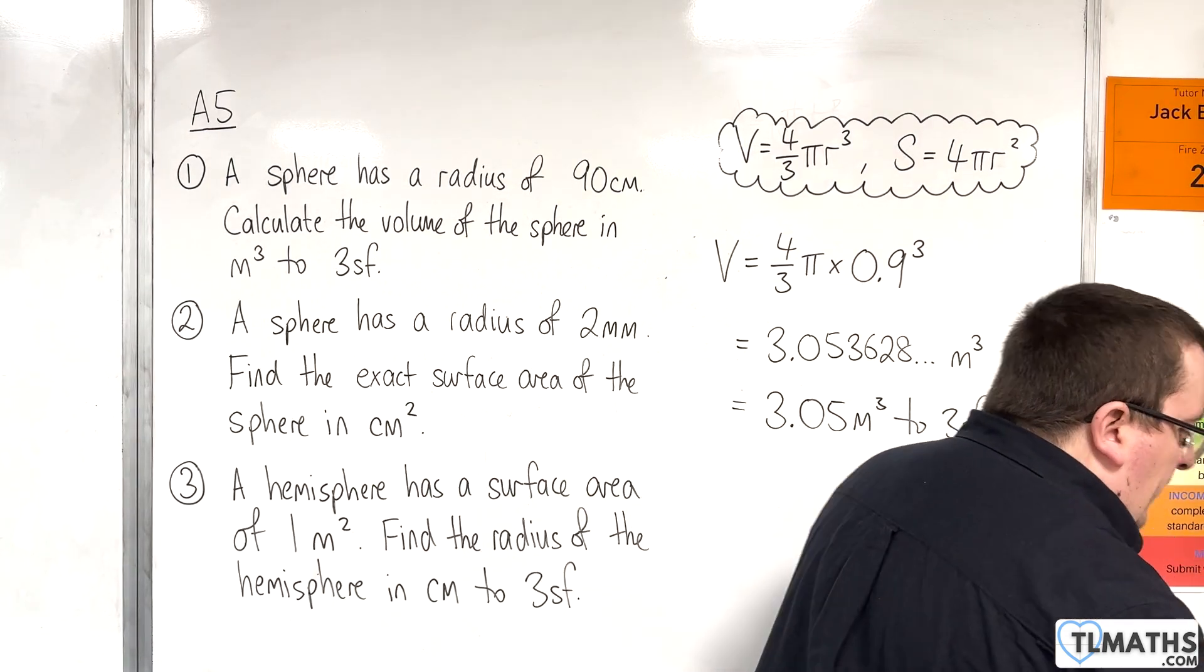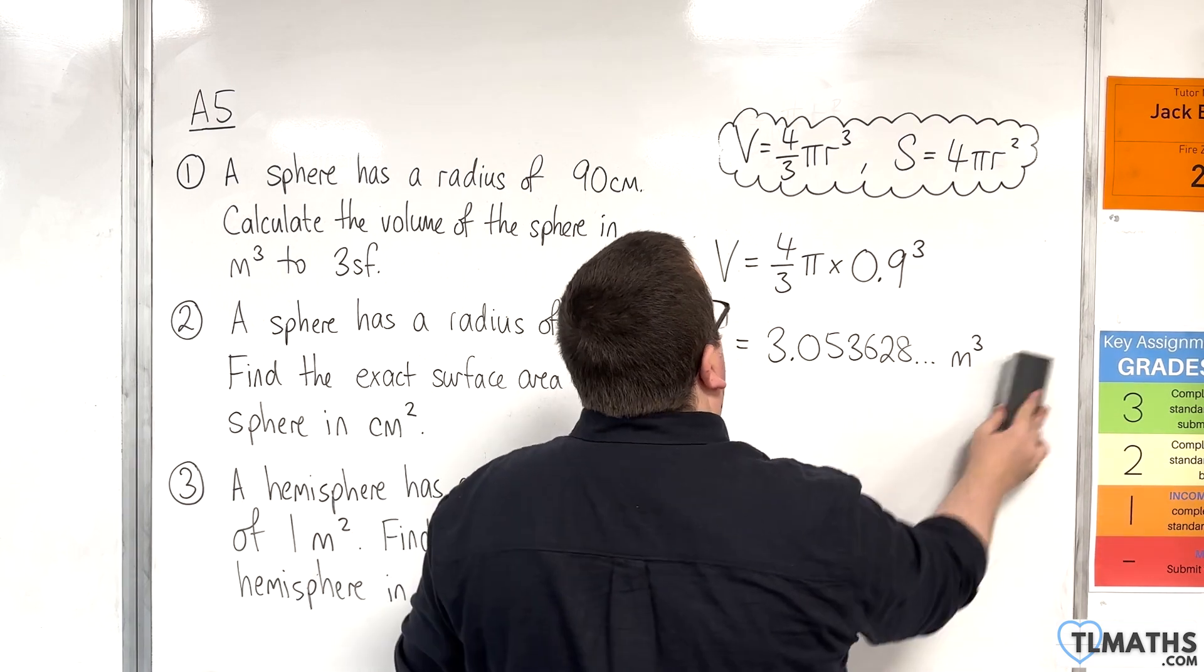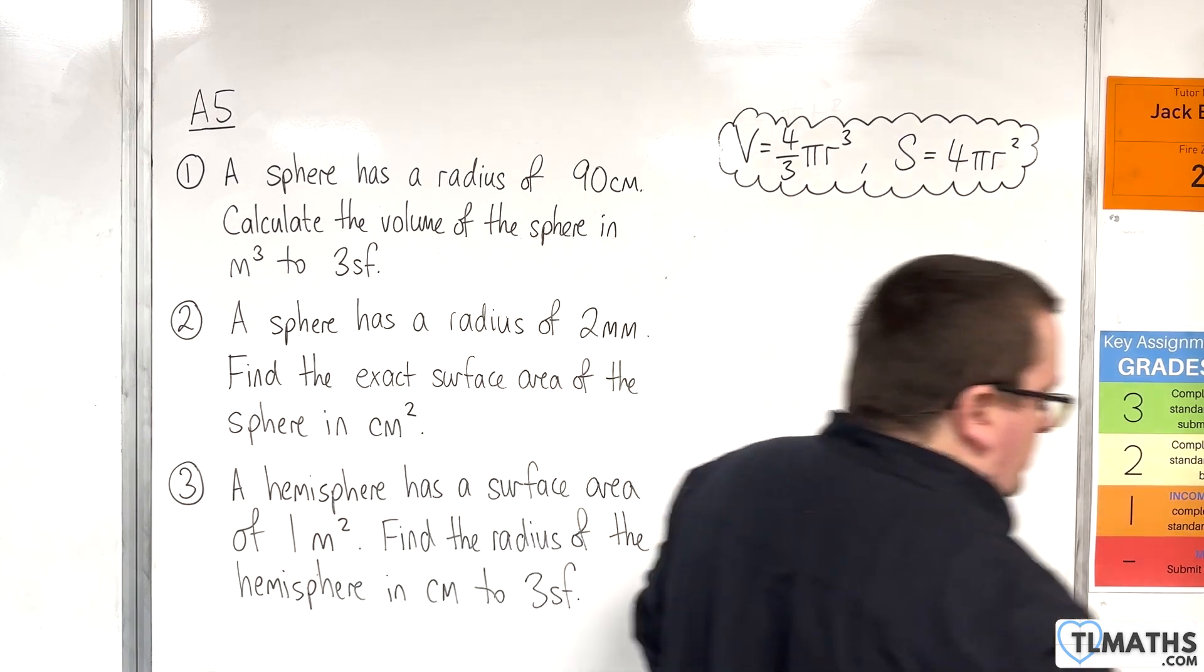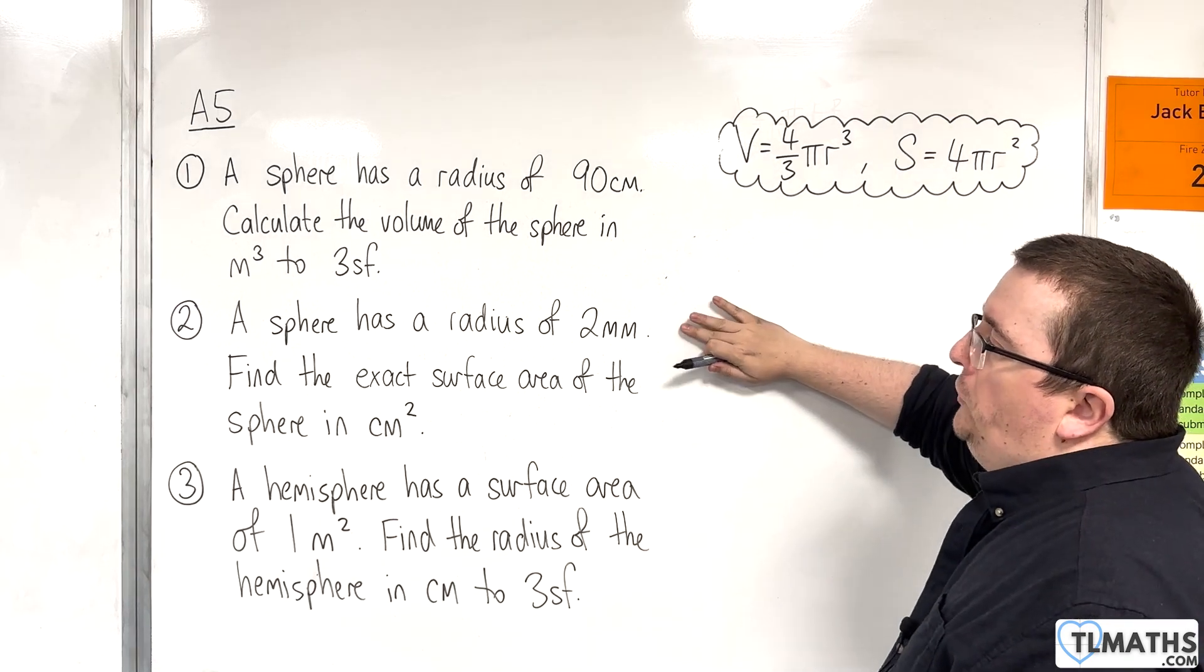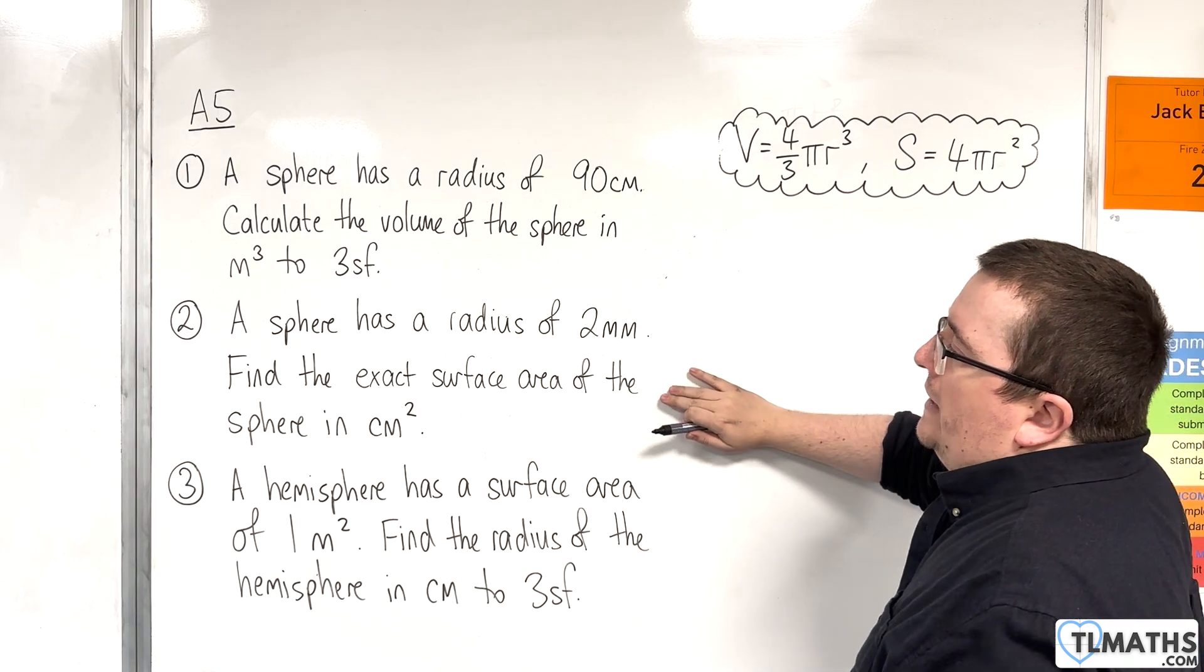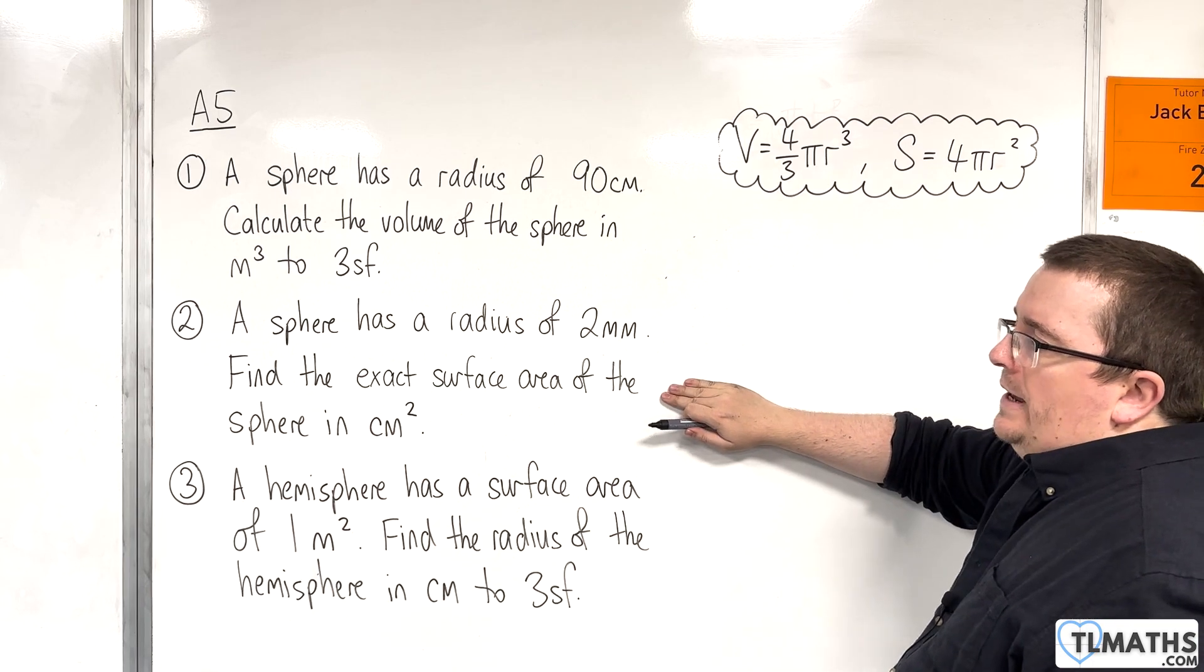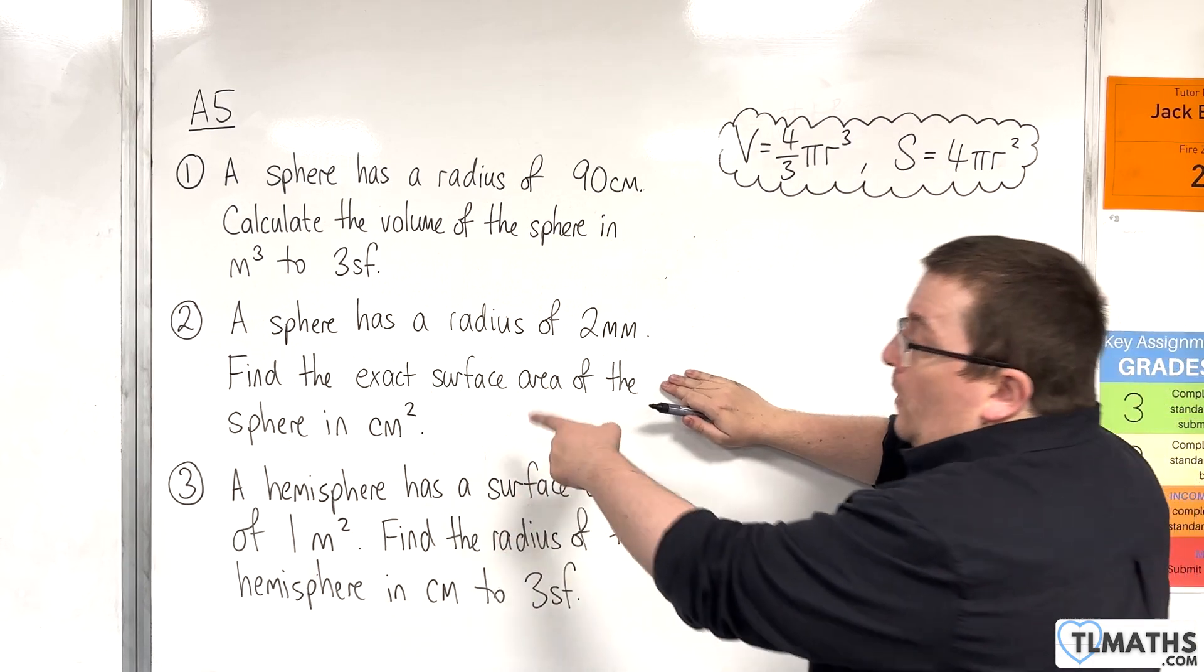OK, so that's our first one. Number two, a sphere has a radius of two millimeters. Find the exact surface area of the sphere in square centimeters.